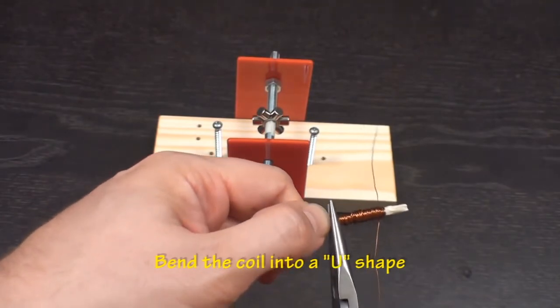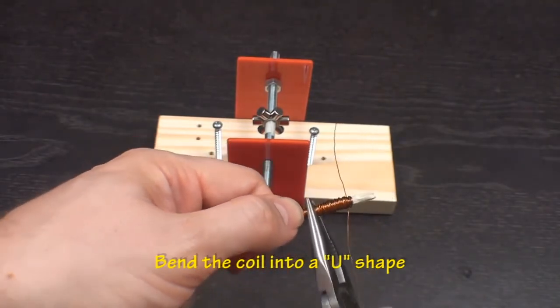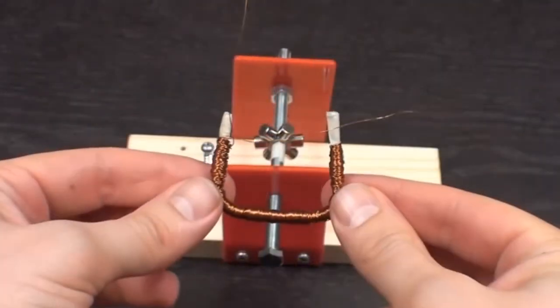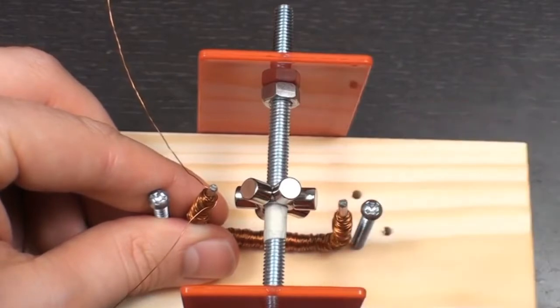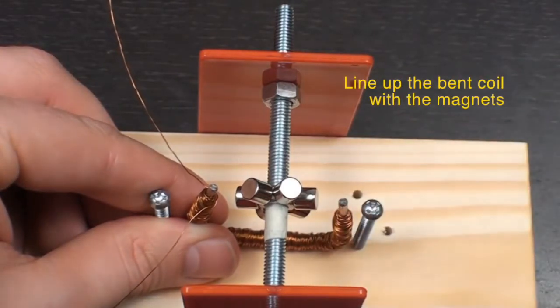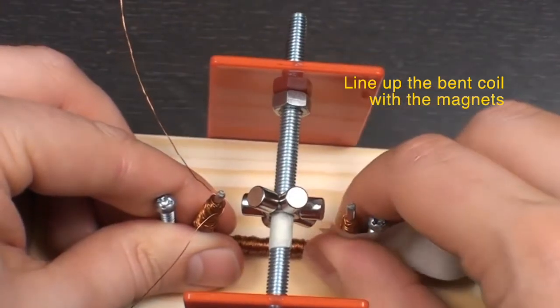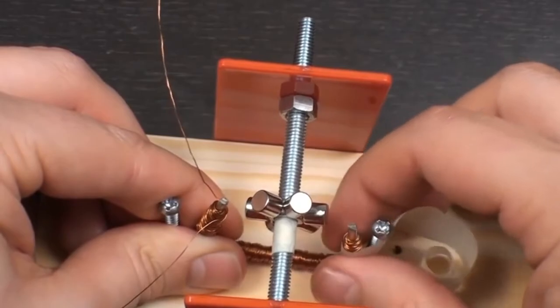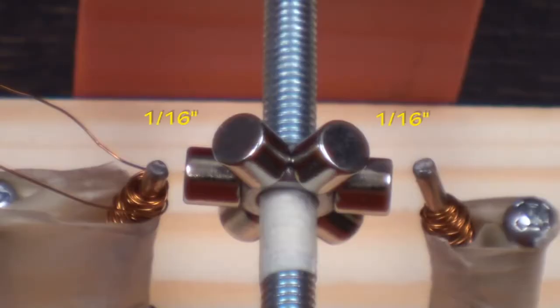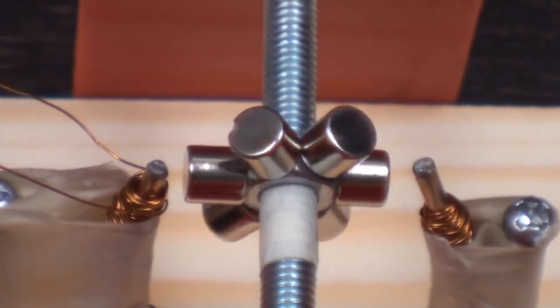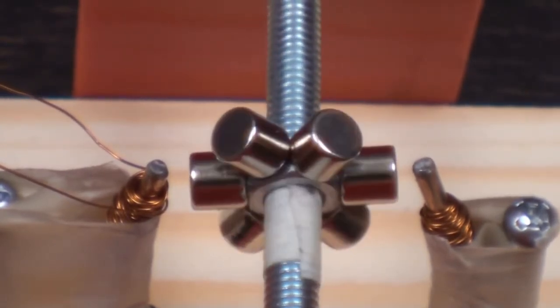You will need to bend the coil into a U shape. Place the bent coil between the two screws with the magnet between the tips of the coil. Make sure the tips of the coil are about one sixteenth of an inch away from the magnet as this allows more current to be generated. Spin the bolt to make sure that the magnets clear the coil.